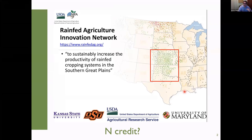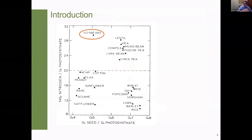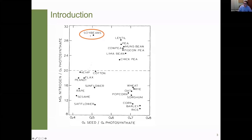Before getting into the nitrogen credit issue, the first thing to understand is specifically why soybeans need so much nitrogen. This figure — probably 20 or 30 years old — is still extremely relevant. The Y axis shows the amount of nitrogen per unit of photosynthate, and the X axis shows grams of seed per unit of photosynthate. Soybeans are one of the few crops — if not the crop — that basically needs more nitrogen per unit of carbon. When you are producing seeds from this high-protein crop, the implications are significant: if fixation is not enough, there is a real hunger for nitrogen.